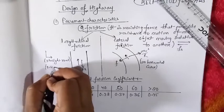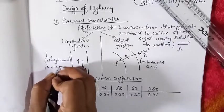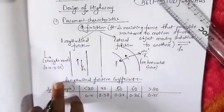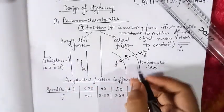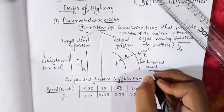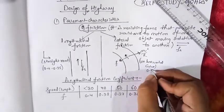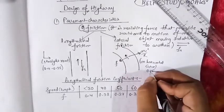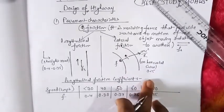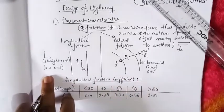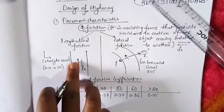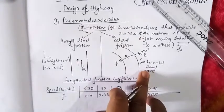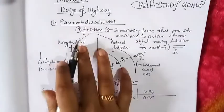So the longitudinal friction coefficient ranges from 0.40 to 0.35 depending upon speed. In the case of lateral friction, its value is 0.15 on a horizontal curve. So that is the value of lateral friction on a horizontal curve and the longitudinal friction on a straight road.